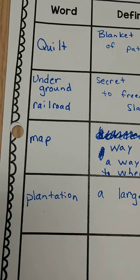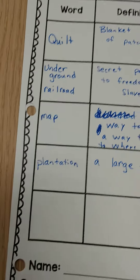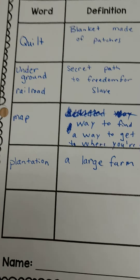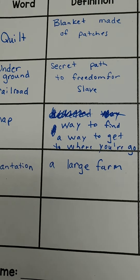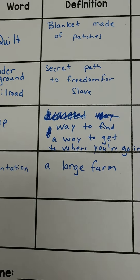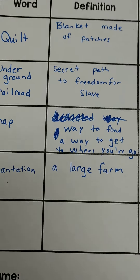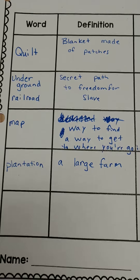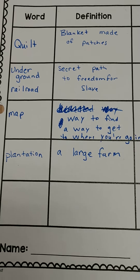The next word is map. A map is a way to find how to get to where you're going. Sometimes this is on paper. Nowadays we use maps on our phones, but it is a way to get to where we're going.